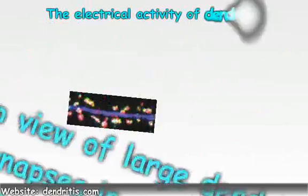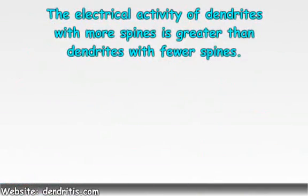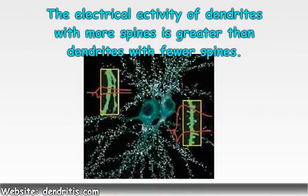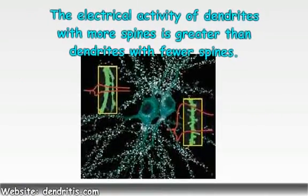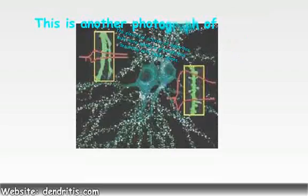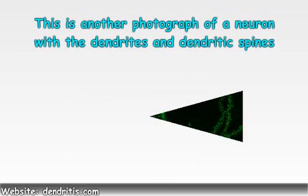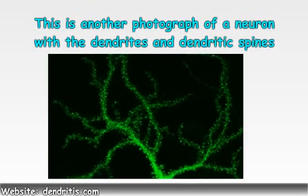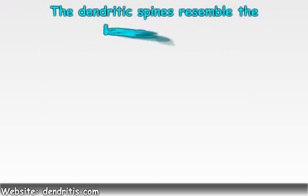The electrical activity of dendrites with more spines is greater than dendrites with fewer spines. This is another photograph of a neuron with the dendrites and dendritic spines. What do you think it resembles? The dendritic spines resemble the leaves on a tree.